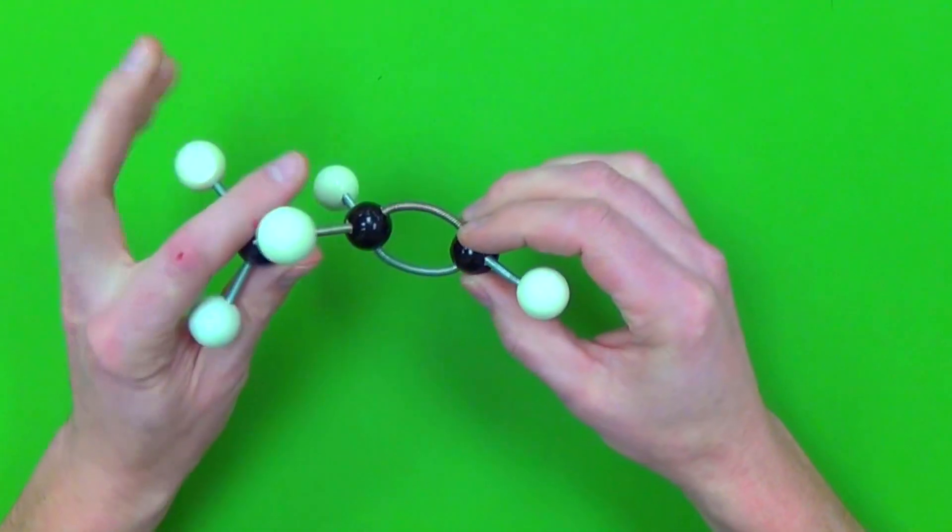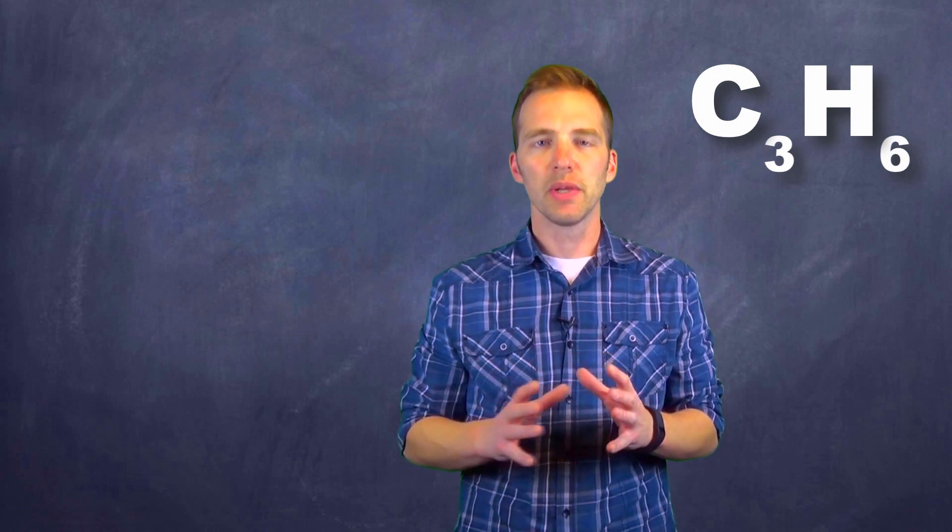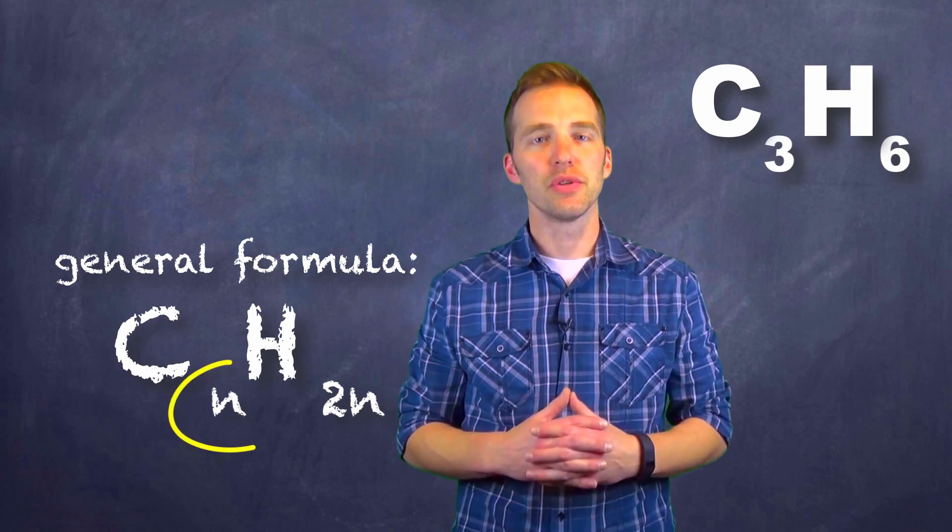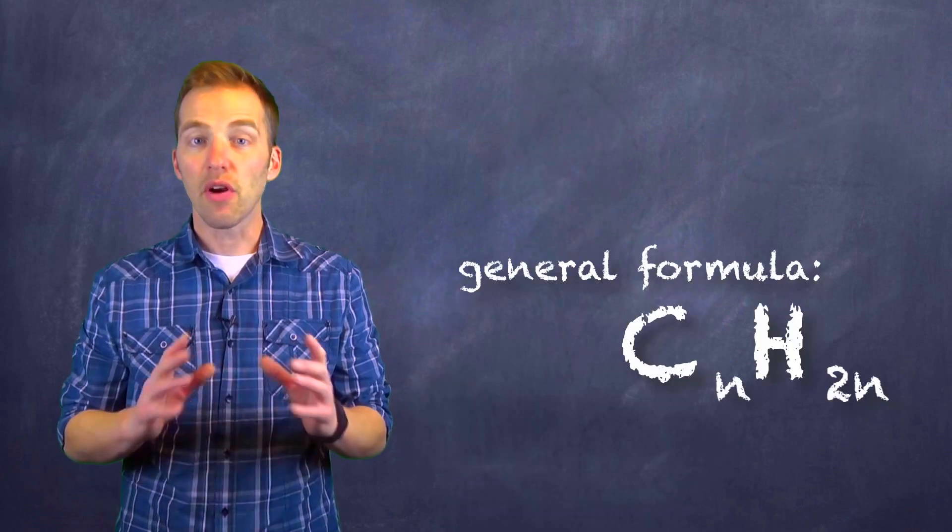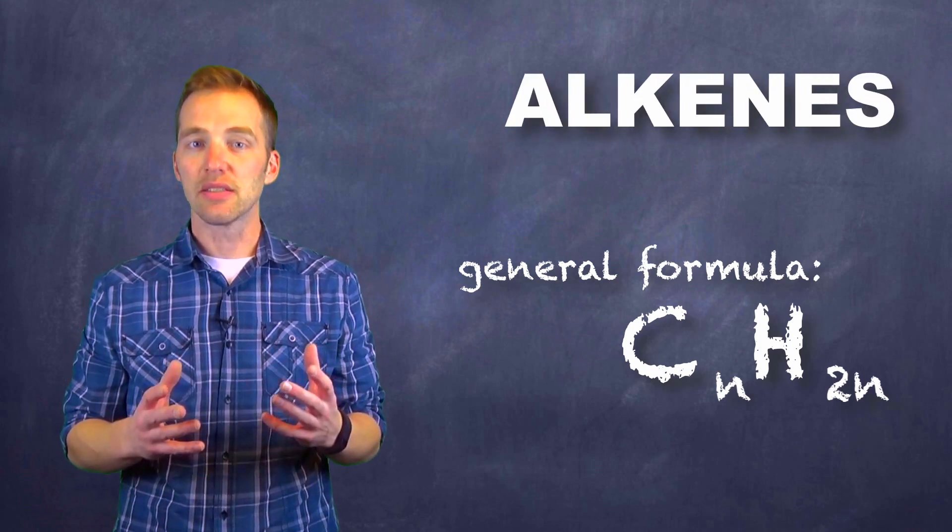That's right, we have a multiple bond. And if we take a look at this formula, we can see that it falls into the general formula of CnH2n, where n refers to the number of carbons that we have. Now there are a certain class of molecules here that we refer to as alkenes.